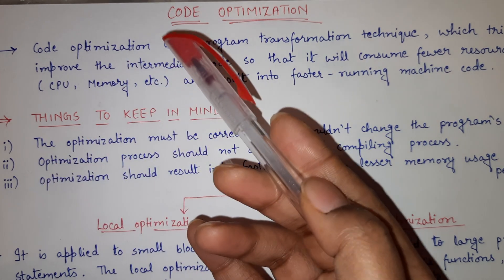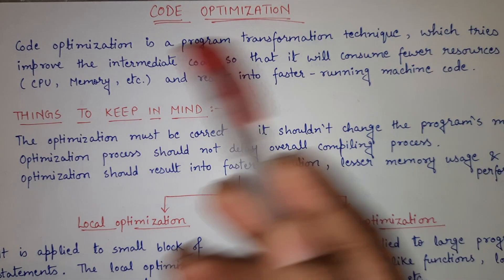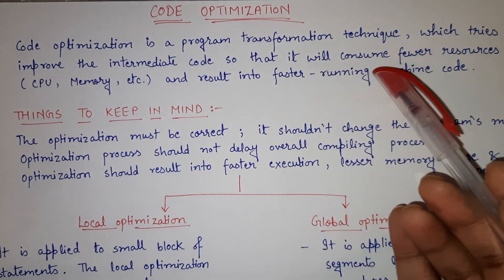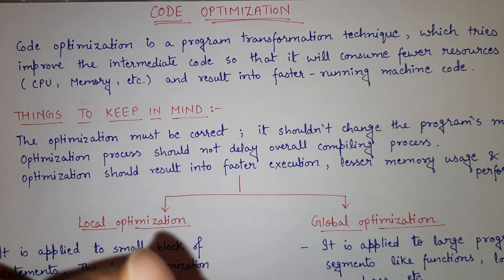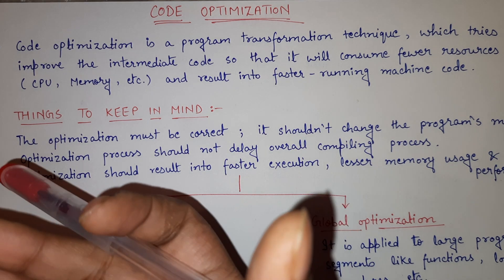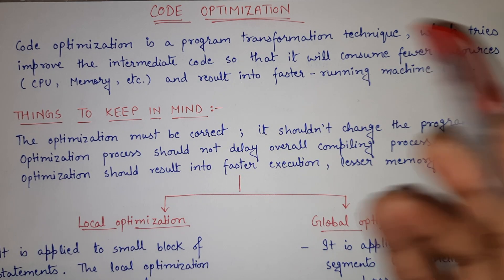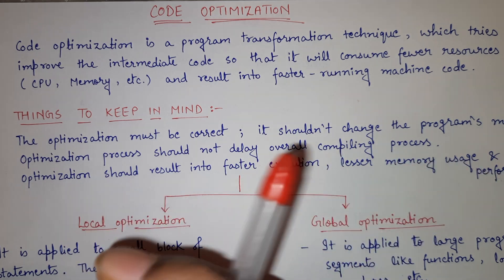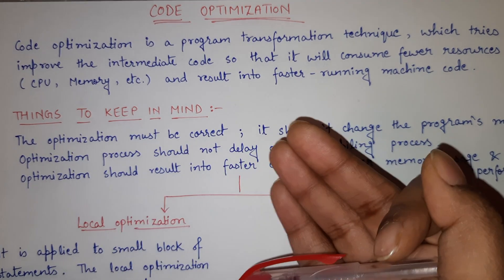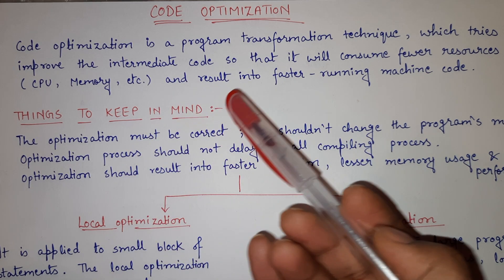First of all, let's see what is code optimization. Code optimization is a program transformation technique which tries to improve the intermediate code so that it can consume fewer resources — like CPU, memory, etc. — and result in faster running machine code. The aim of code optimization is to optimize our code such that it consumes fewer resources, improving both time complexity and space complexity so that the program takes less time to execute and less memory.